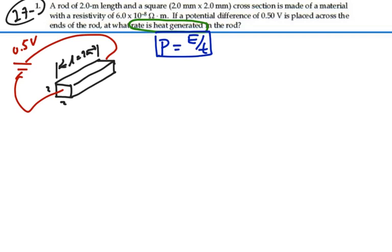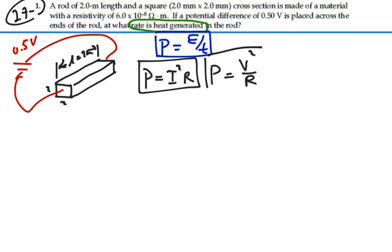If we can figure out the resistance of this rod, then we can calculate the power generated. We know from our power equations that power equals I squared R, or power equals V squared over R. Since we know the voltage, we'll use this second form where voltage and resistance are related. So let's calculate the resistance of this rod.